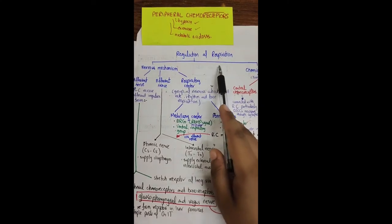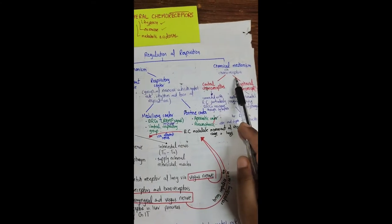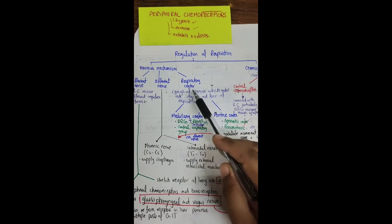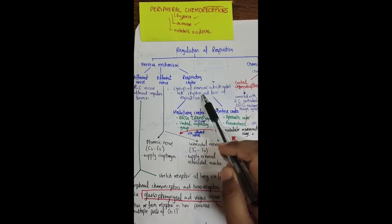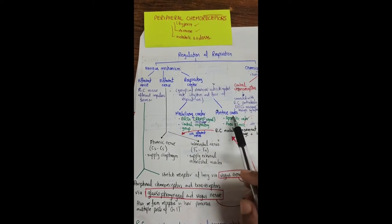So respiration is regulated by two means, nervous mechanism and chemical mechanism. Nervous mechanism mainly we have respiratory center. Respiratory center is a group of neurons which control rate, rhythm and force of respiration that is located in the brain, medulla and pons.